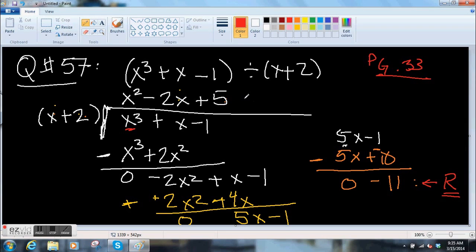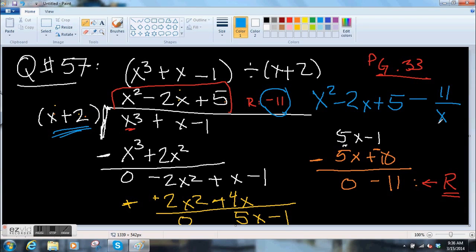So our answer, here's our remainder of negative 11. The way you write this whole answer is you take this piece here. x squared minus 2x plus 5 minus, or you could say plus. I said minus because this remainder is negative. You do the remainder like this. 11 over this piece that you're dividing by. x plus 2.